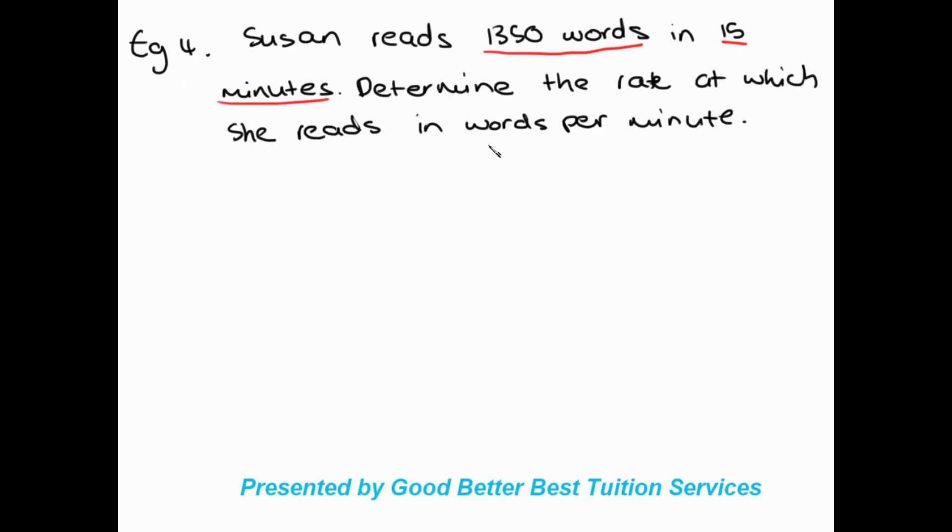We're going to look for our key signs in here. Susan reads 1,350 words in 15 minutes. When they say determine the rate at which she reads in words per minute, this is a very important part. Remember earlier when we're dealing with kilometers per hour, we wrote it like that. And remember I said we can write it as kilometers over hour to find out kilometers per hour. Now they're asking us to work out words per minute. We know that words per minute is going to be words over minutes.